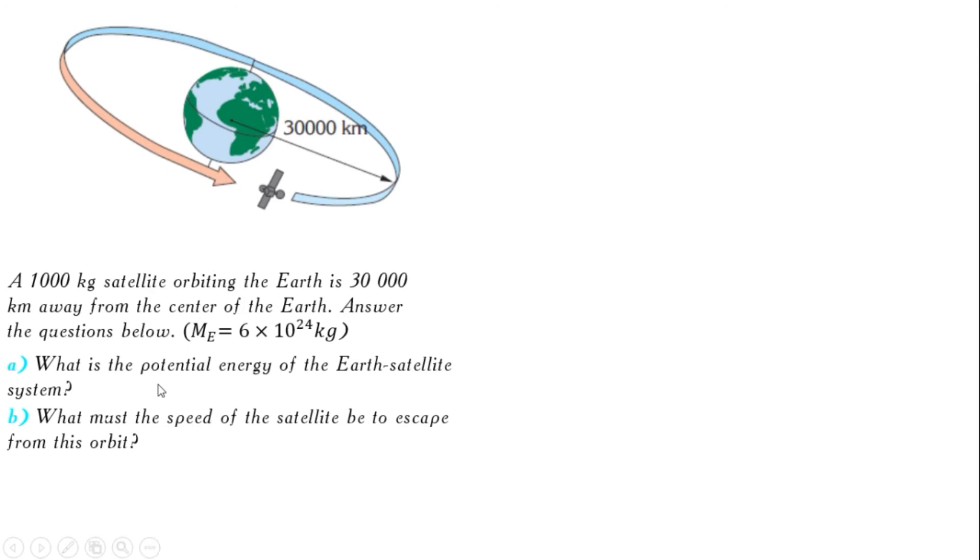So in this question, we have to find two things. First, gravitational potential energy, and the second, the escape speed of the satellite. Solution. For A.